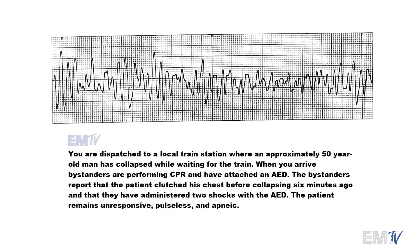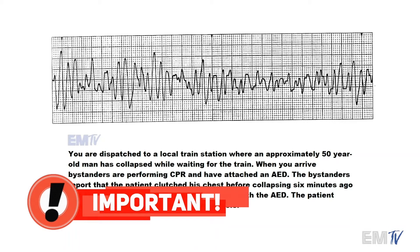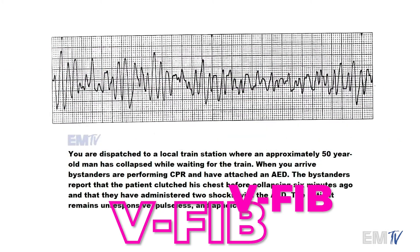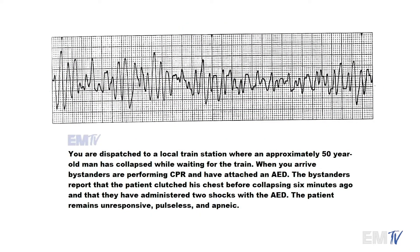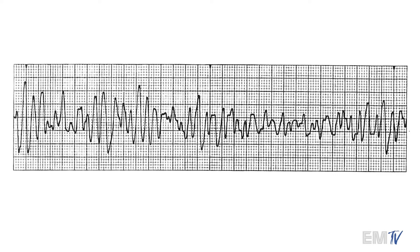So this card should be pretty straightforward. Just looking at the rhythm, a lot of you folks already know what this is, but there are some clues here in the actual scenario. In the scenario I mentioned that there's an AED that's been attached and you've delivered two shocks. AEDs are only designed to recognize and shock one of two rhythms: either pulseless ventricular tachycardia or v-fib. Right away you can tell that this rhythm is chaotic and unorganized, and very wide and chunky in appearance. These are all the hallmarks of ventricular fibrillation.